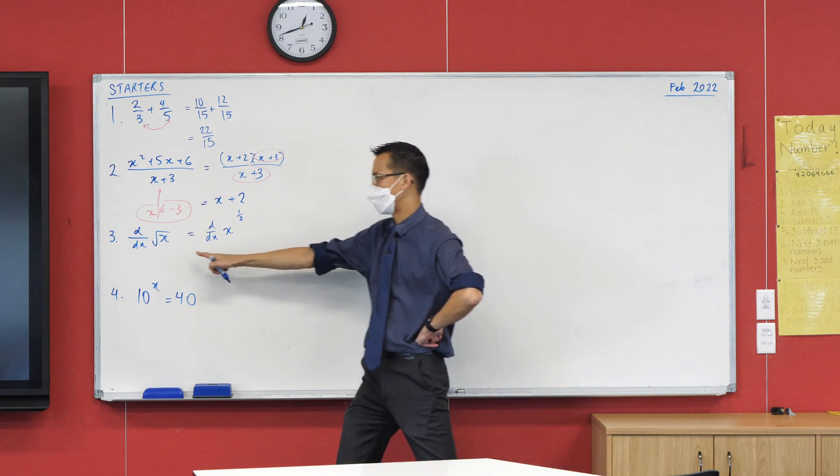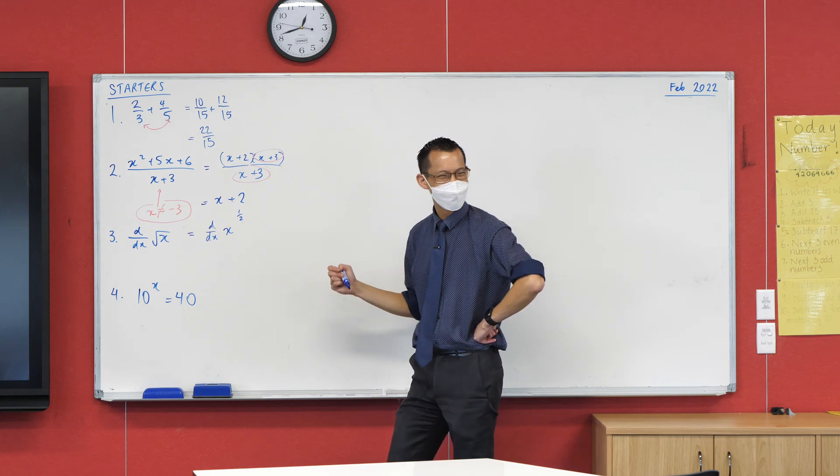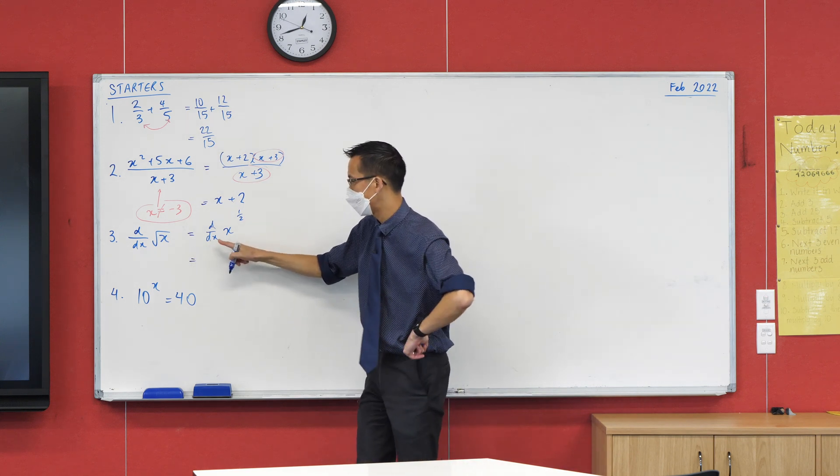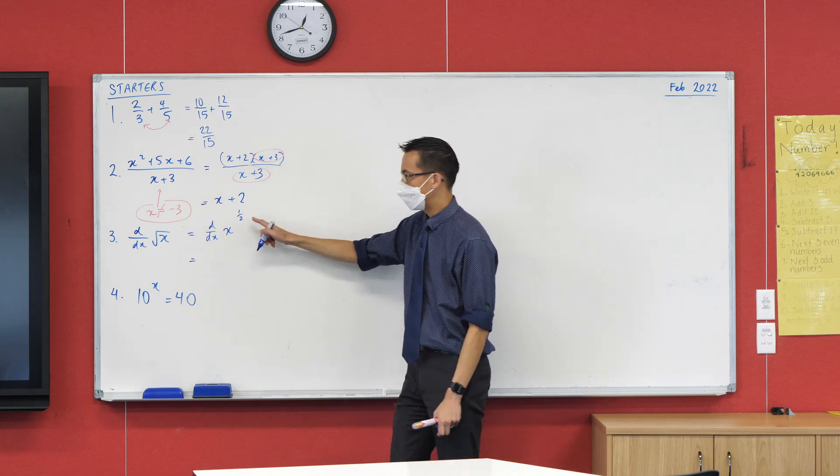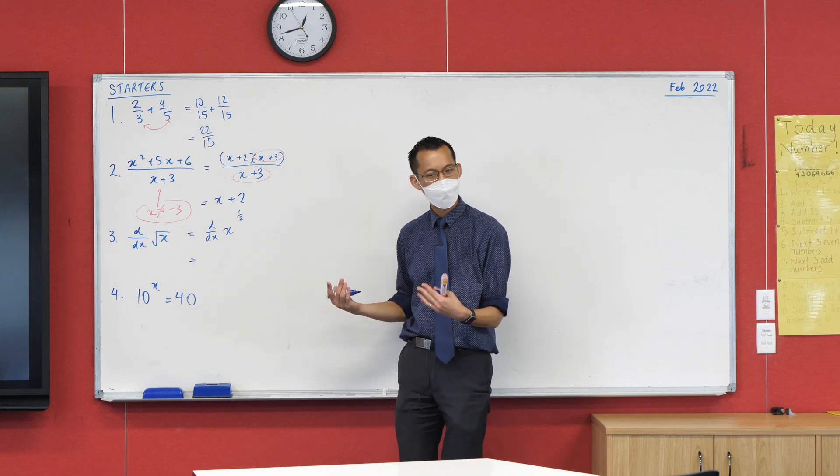So what you did was you said it's weird as a square root, but if you change it into an index, well actually, can I ask you, why is that better? Like, usually we would prefer you to write things like this. What's the advantage? I don't know, is it easier to differentiate? Yeah, yeah, it is absolutely.